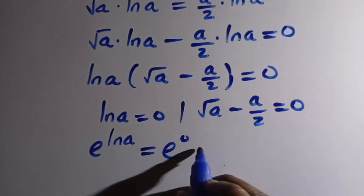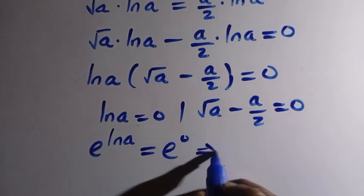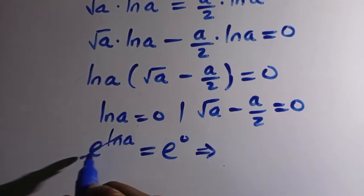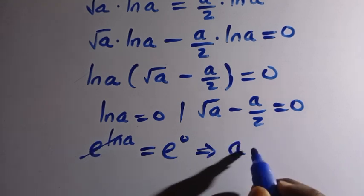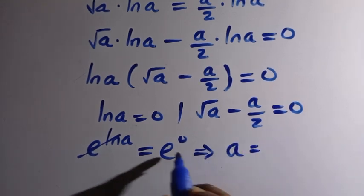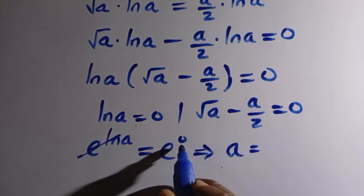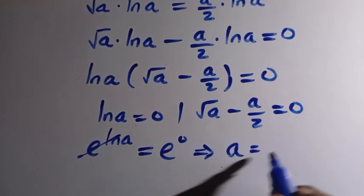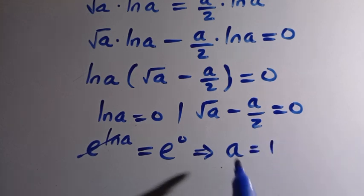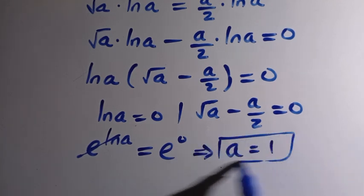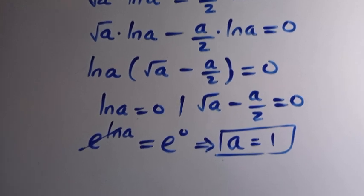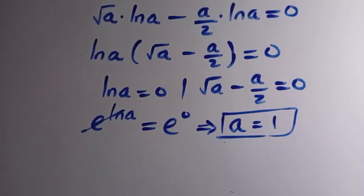Since e and ln are inverses of each other, they cancel, and we have a equals e raised to the power of 0, which equals 1. Therefore the first value of a is a equals 1.